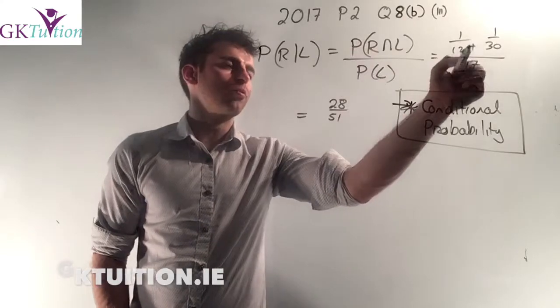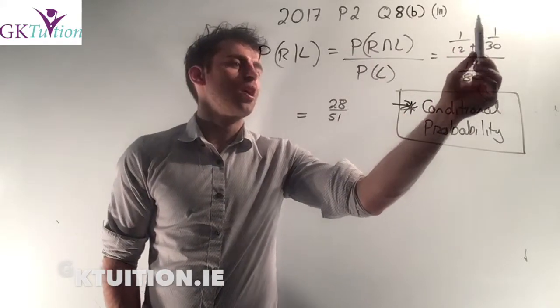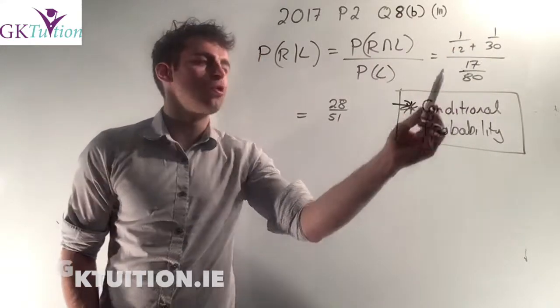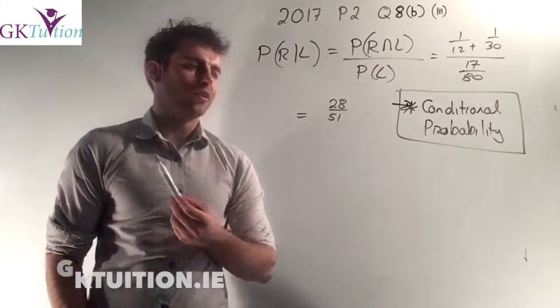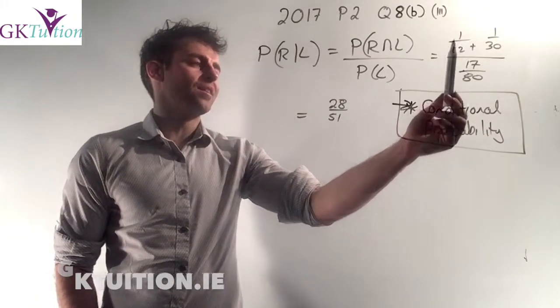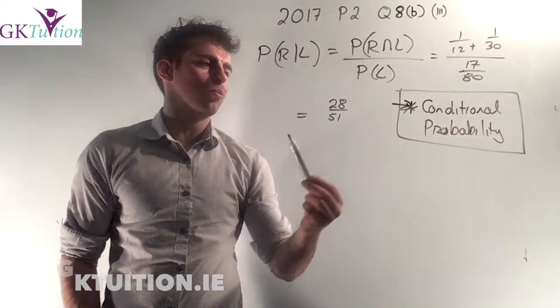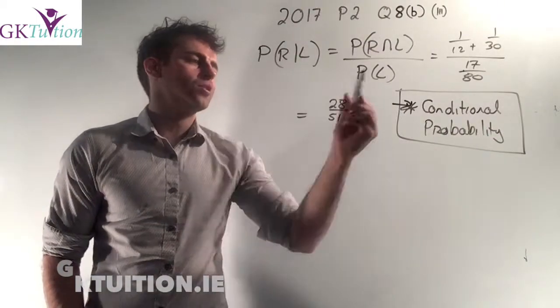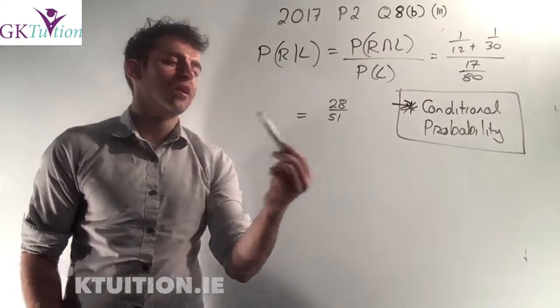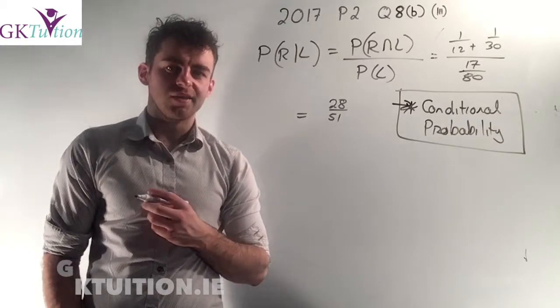The second one was, or the third one in that branch, was the probability of rain in the morning and there's no traffic and you're late. That's one over thirty. To work out the chances that the first one happens or the third one happens, you add them together. So if you plug all that into your calculator, your final answer works out as twenty-eight over fifty-one.